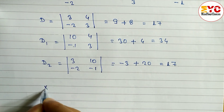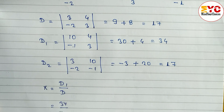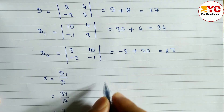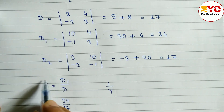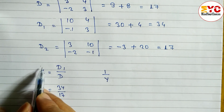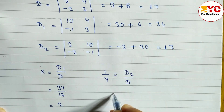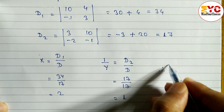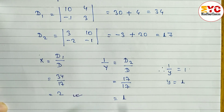Now we find the values of x and 1 by y. The formula for x is D1 by D, so 34 by 17, which gives us x equals 2. Since we wrote 1 by y in the matrix, we find 1 by y equals D2 by D, which is 17 by 17, equals 1. So 1 by y equals 1, meaning y equals 1. The value of x is 2 and the value of y is 1.